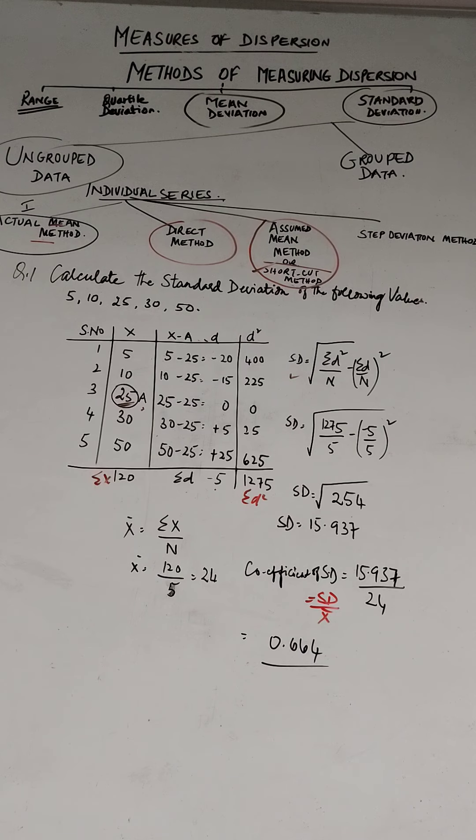You obtain the sigma d square, which comes to 1275 as you can see on the board. Then apply the following formula, and that's how you get the standard deviation.